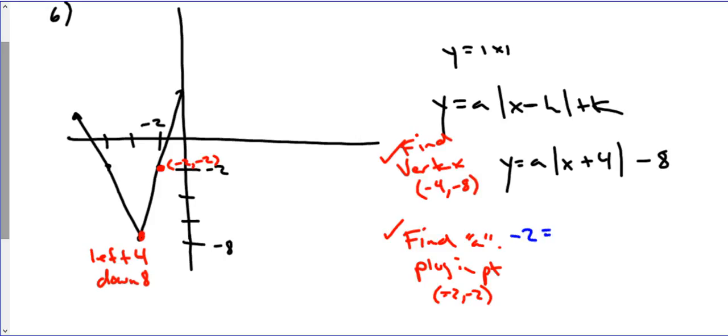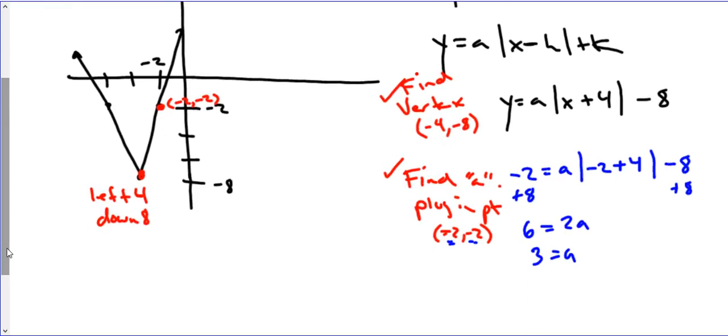We have A times the absolute value of negative 2 plus 4 minus 8. I'm going to add 8 to the other side. 6 equals 2A. A is going to equal 3. It's a vertical stretch, and that's what happened here. So we get our final equation: Y equals 3 times the absolute value of X plus 4 minus 8.